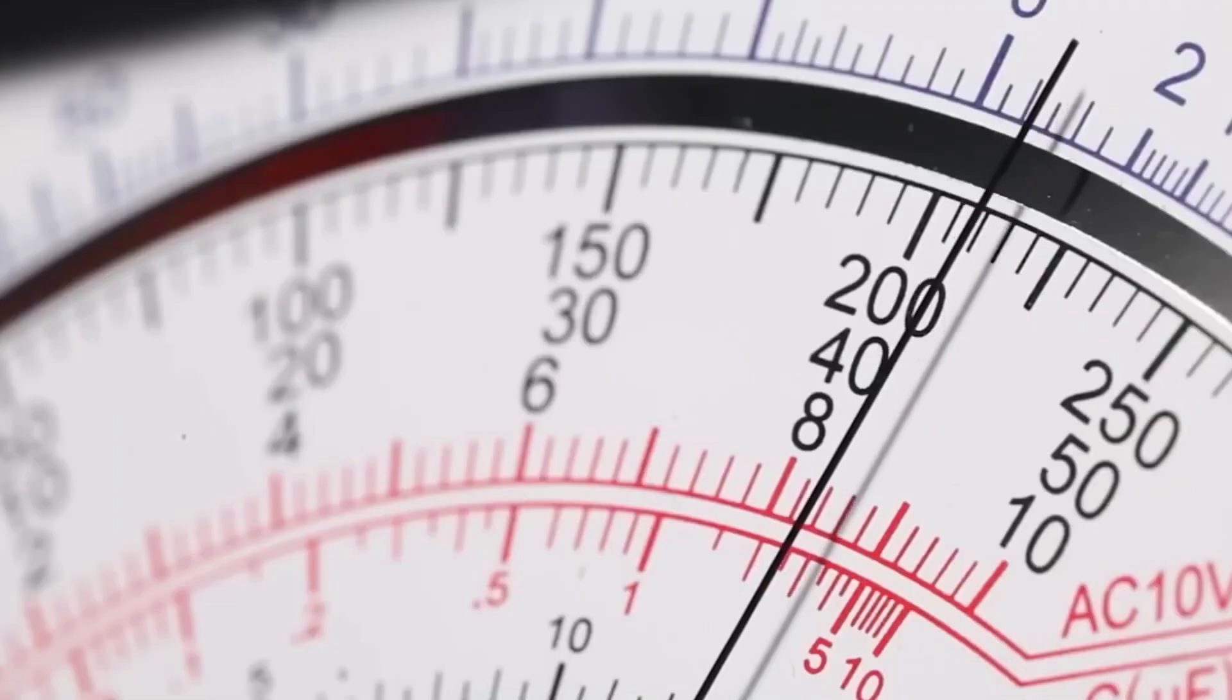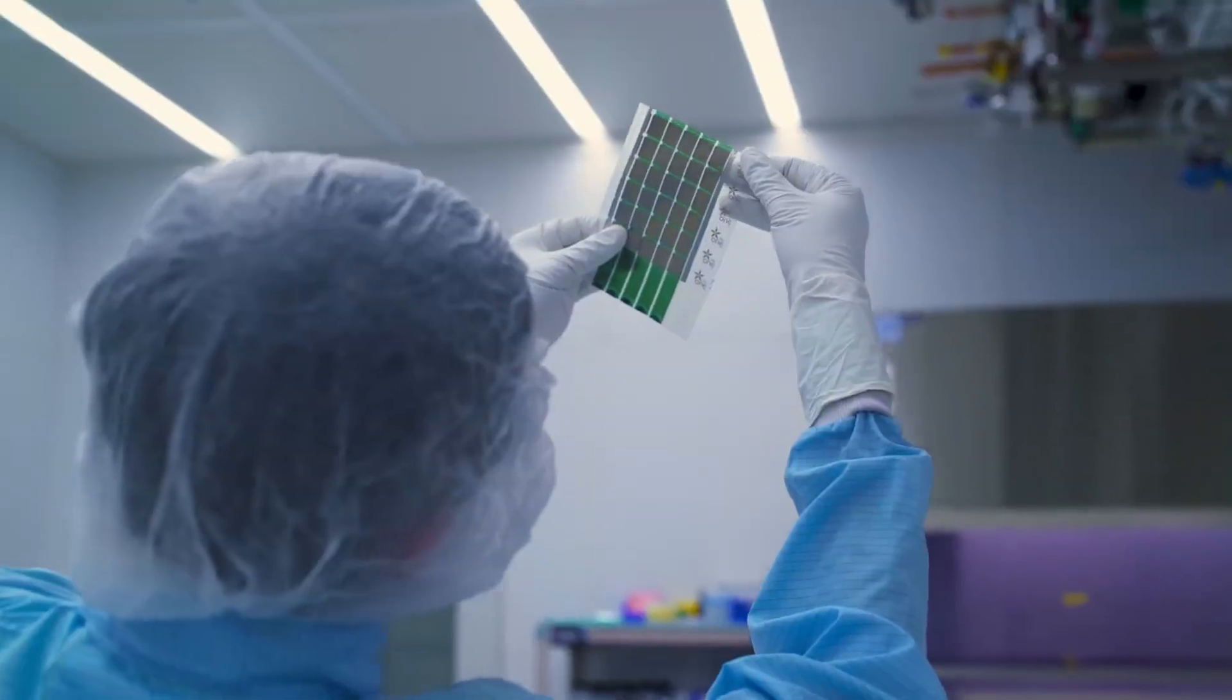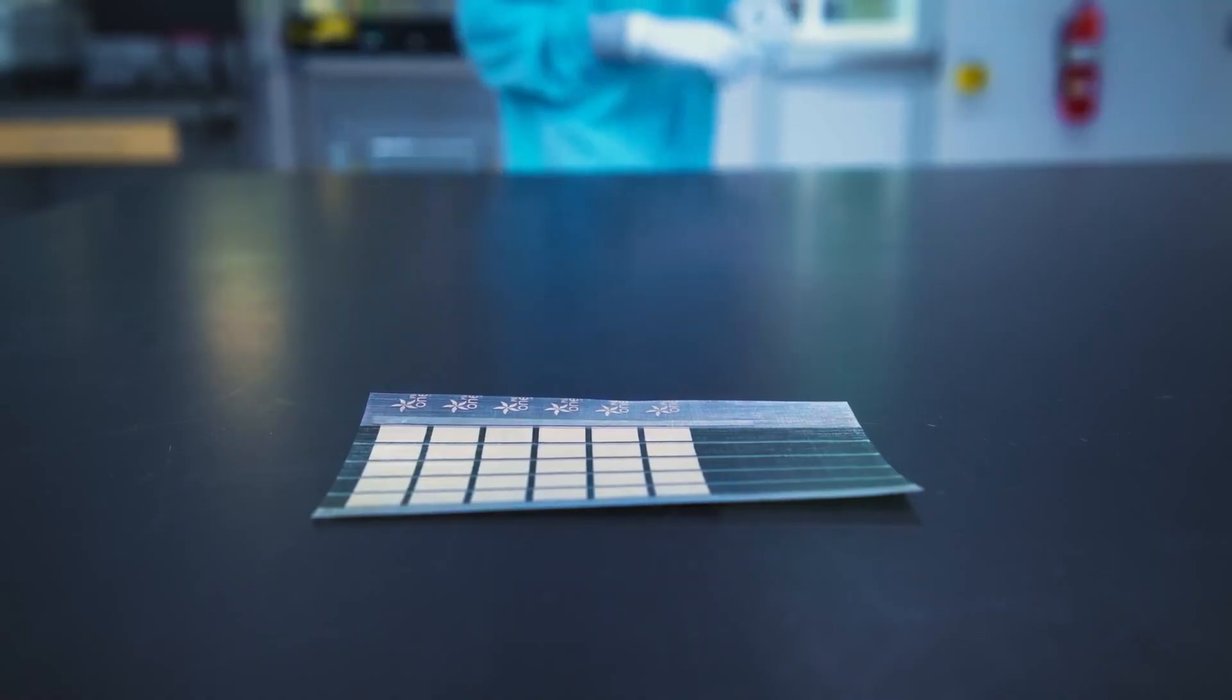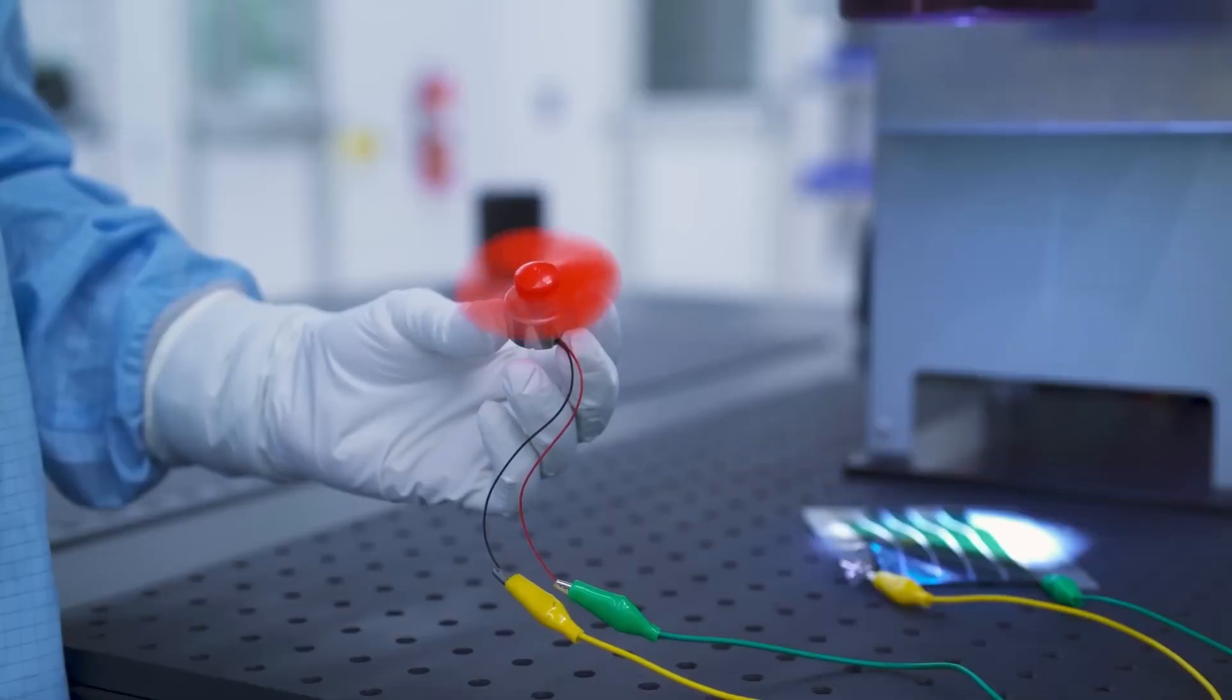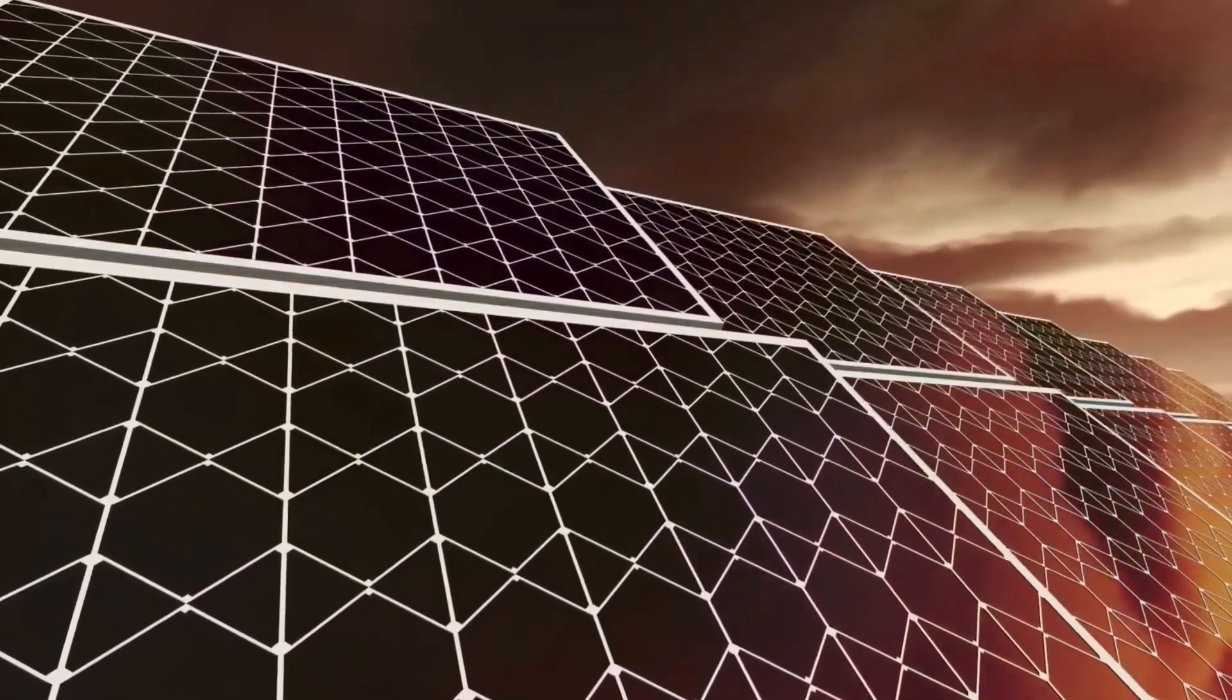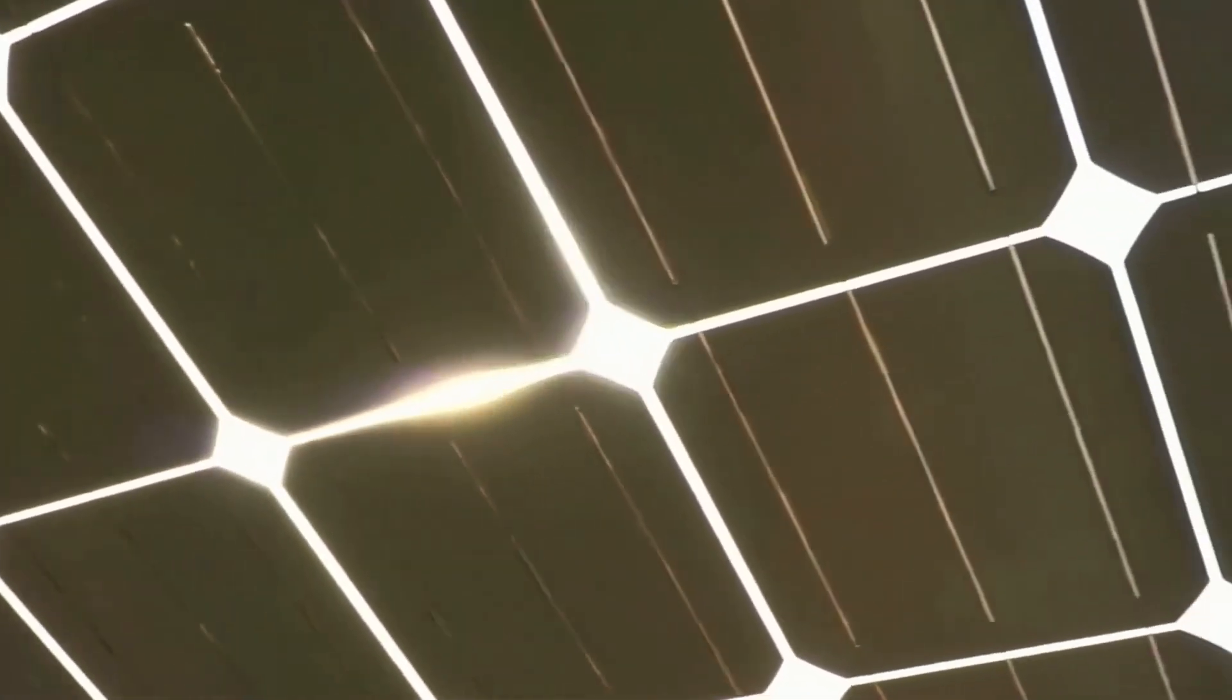The flexibility and low weight of solar cells made of polymers is another advantage. Contrary to solid silicon solar cells, polymer-based solar cells may be formed into thin, flexible sheets that are simple to incorporate into a variety of surfaces, including building facades, windows, and even clothes. As a result, solar power generation has a wider range of uses and opportunities.